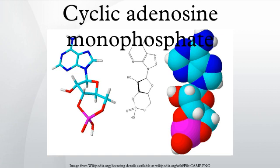cAMP also binds to and regulates the function of ion channels such as the HCN channels and a few other cyclic nucleotide-binding proteins such as EPAC1 and RAPGEF2.